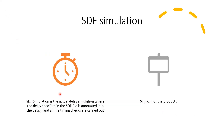SDF simulation is an actual delay simulation where the delay specified in the SDF file is annotated into the nets of the design and the timing checks are calculated. This type of simulation is much slower than zero delay or unit delay simulation, but it is considered the sign-off simulation for the product.